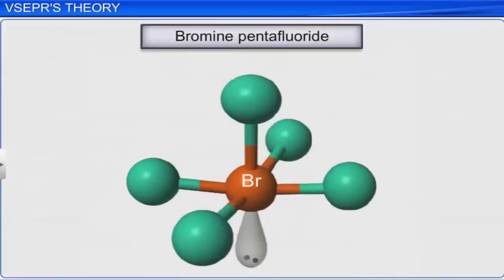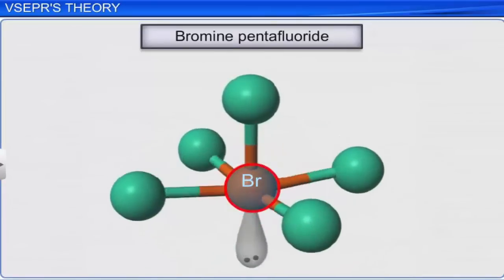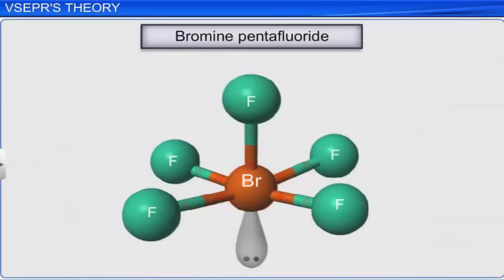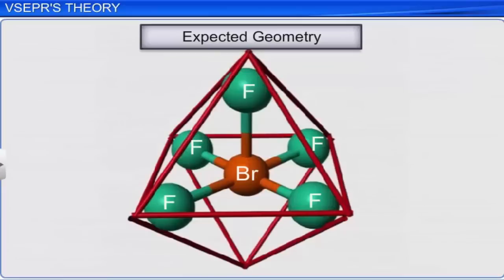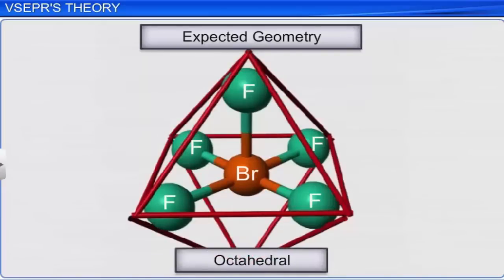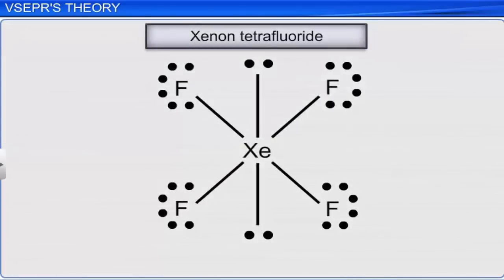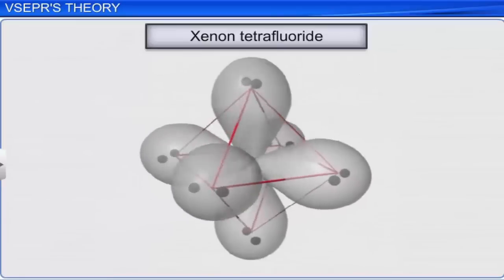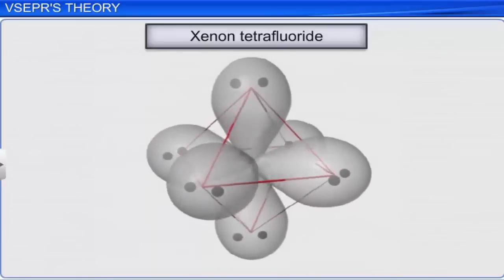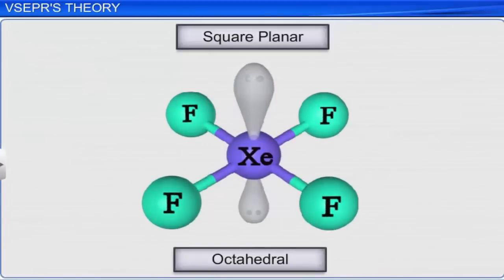In a molecule of bromine pentafluoride, the central atom bromine has five bonded pairs of electrons and one lone pair of electrons. Therefore, the geometry of the molecule is distorted octahedral or square pyramidal, due to the presence of the lone pair on the central bromine atom. In a molecule of xenon tetrafluoride, the central xenon atom is surrounded by four bonded pairs and two lone pairs of electrons. The geometry is distorted to square planar from the regular octahedral geometry, due to the two lone pairs on xenon.